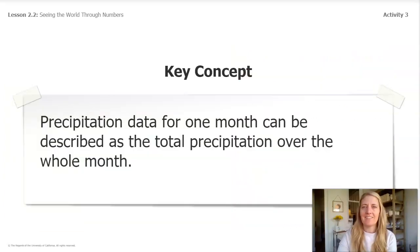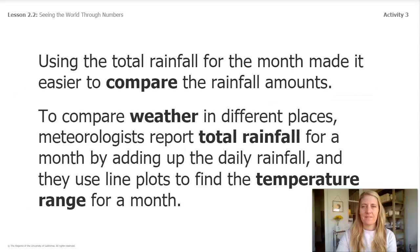Here is another key concept for today. Precipitation data for one month can be described as the total precipitation over the whole month. Using the total rainfall for the month, it makes it easier to compare the rainfall amounts. To compare the weather in different places, meteorologists, just like you, report the total rainfall for a month by adding up the daily rainfall. And they use line plots to find the temperature range for a whole month.